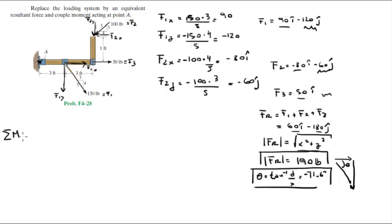Now there's sum of the moments at A. The first moment is being created by F of 1 of Y times this lever arm of 3. So it's F1 of Y is equal to 120, so it's 120 times 3.